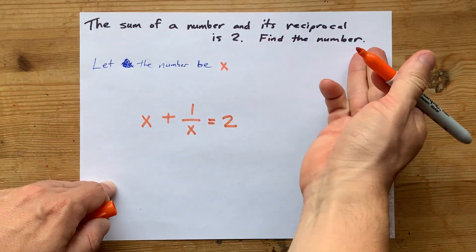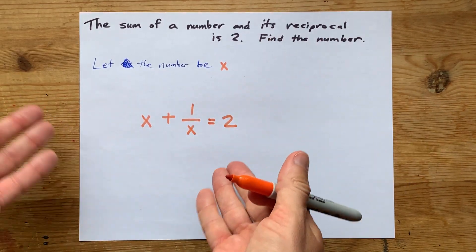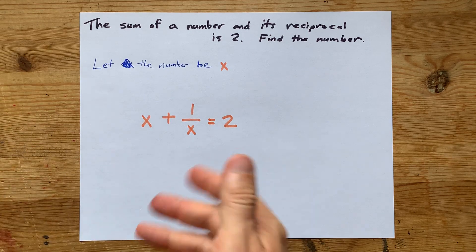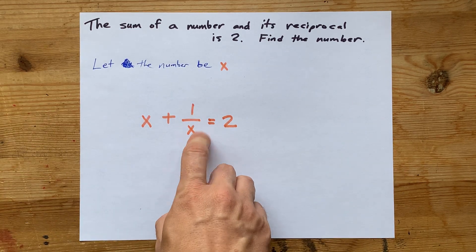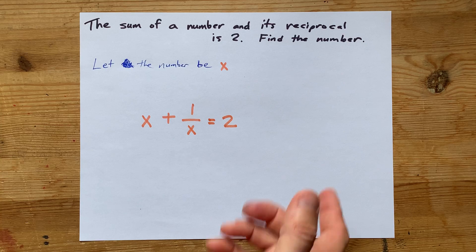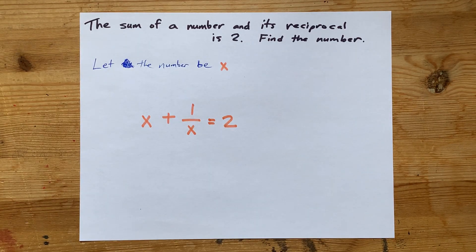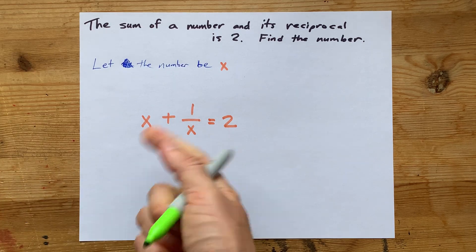And now to find the number all we have to do is solve for x in this equation. Now the first thing I want to do is get rid of these fractions. How can you undo dividing by x? Well the easy answer is the opposite of dividing,